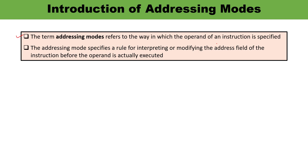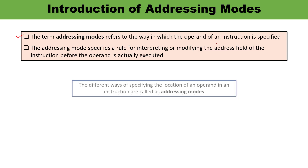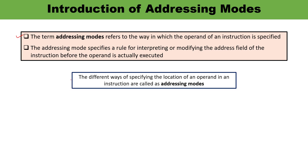Whenever any operation is to be executed, that operation must be executed on some data. Data may be stored in the computer registers or memory. The way the operands are chosen during program execution is dependent on the addressing mode of the instruction. Alternatively, the different ways of specifying the location of an operand in an instruction is known as addressing modes.